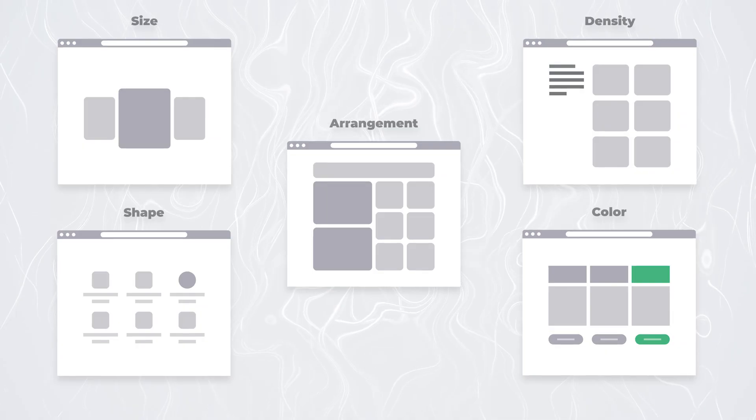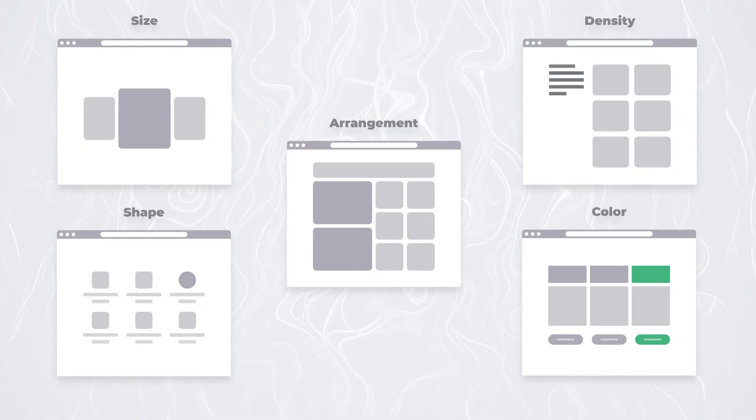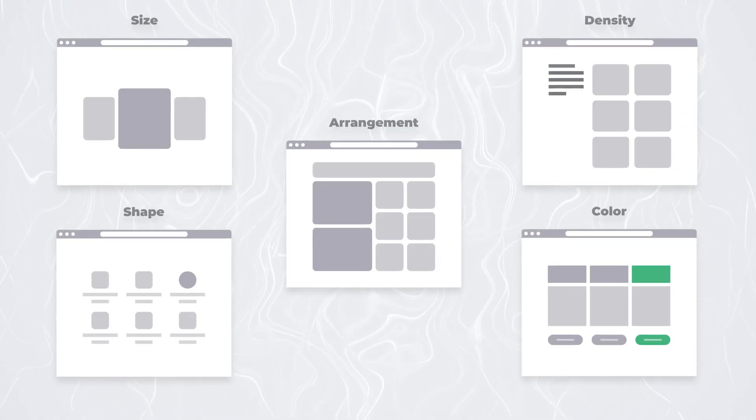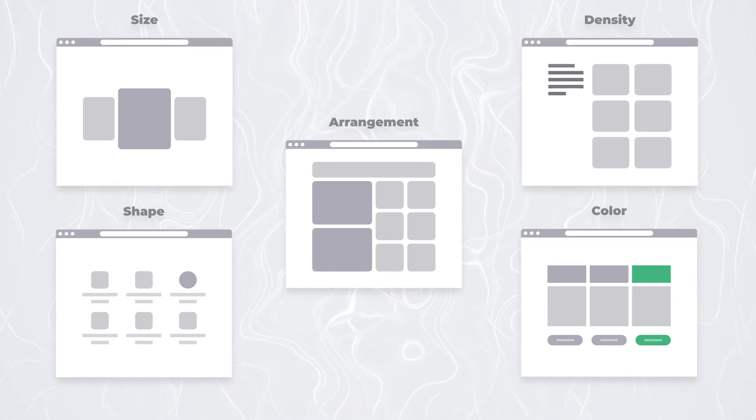You will encounter the concept of visual hierarchy in all forms of graphic design. In short, the most important elements should be the most prominent and less important ones the most withdrawn. Good visual hierarchy allows users to immediately identify the importance of different content pieces, the relationship between each other, and available actions. You can define that importance through size, shape, arrangement, density, and color.